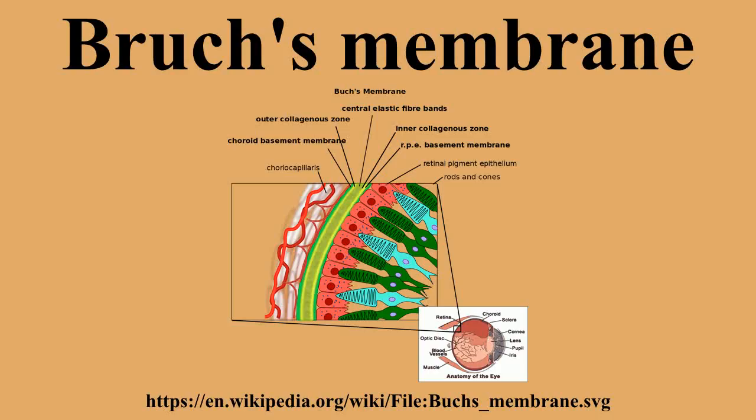The retinal pigment epithelium transports metabolic waste from the photoreceptors across Bruch's membrane to the choroid. Bruch's membrane is present by midterm in fetal development as an elastic sheet.